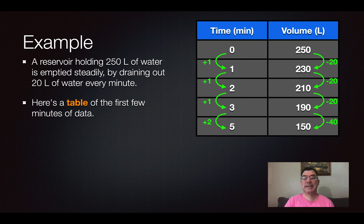All right. What we notice is the time is increasing in increments of one minute and the volume is decreasing by 20 liters with every new row in the table. That to me represents a linear graph or a linear model.